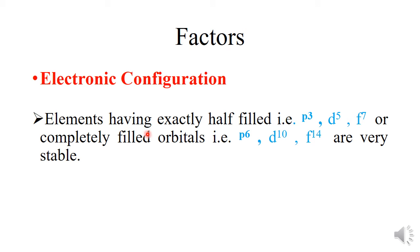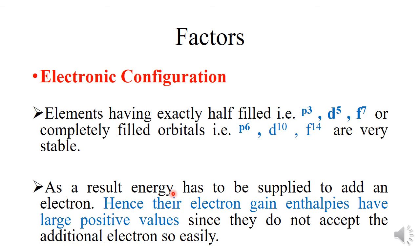Third is electronic configuration. Elements having exactly half-filled orbitals — that is P³, D⁵, F⁷ — or completely filled orbitals — P⁶, D¹⁰, F¹⁴ — are very stable. Due to this, we have to supply some energy to add an electron to these stable orbitals. Hence, their electron gain enthalpies have large positive values, since they do not accept the additional electron easily.